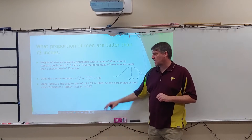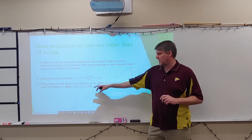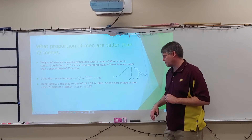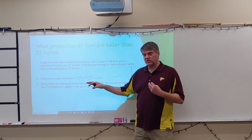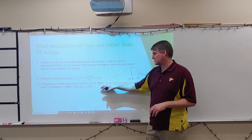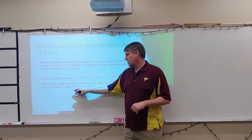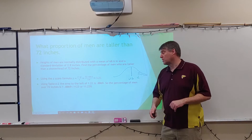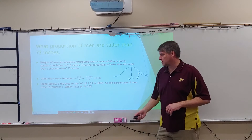I get a z-score of 1.21. Using table A2, the area to the left of 1.21 is 0.8869. So the percentage of men over 72 inches is 1 minus 0.8869, giving 0.1131 — or 11.23% of males are over 72 inches.